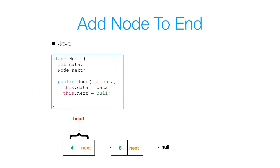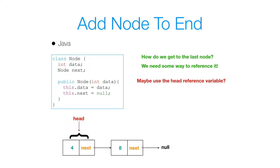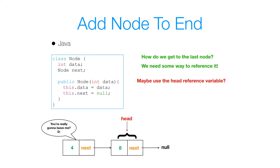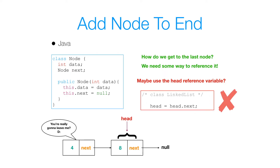Now suppose I wanted to add a node to the end of the list but I didn't know the size of the list. How do we really get to that last node? We need some way to reference it. We can't use our head reference variable because our head always has a reference to the front of the list. If we remove that reference from the front, we destroy the object with data 4, and that's what we don't want to do.